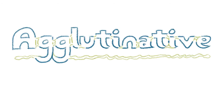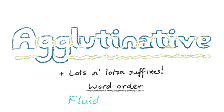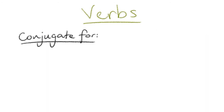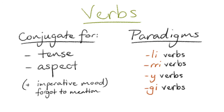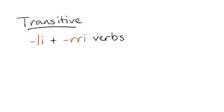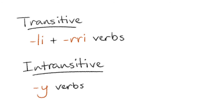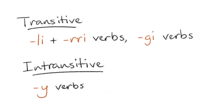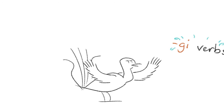Gamilarai is an agglutinative and highly suffixing language with a fluid word order, although the most common word order appears to be SOV. Verbs are conjugated according to tense and aspect, and there are four different conjugation paradigms. Most verbs ending in LI and RI are transitive, most ending in NGI are intransitive, and verbs ending in GI could be either one — we have no idea. Come on, just make your mind up, GI verbs.